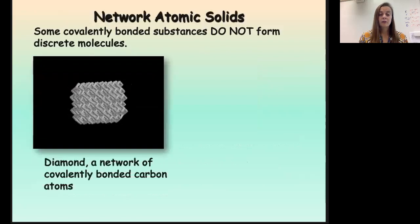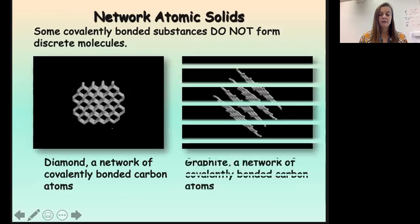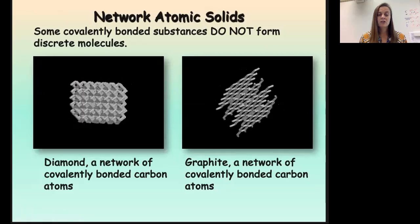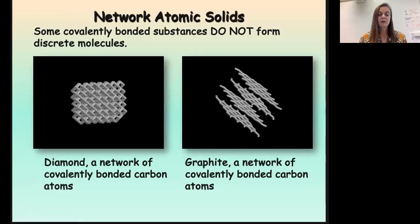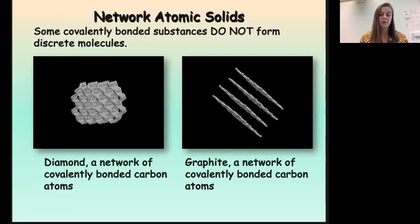So here's just a three-dimensional view of diamond and then a three-dimensional view of graphite. You can see that with graphite, you have those distinct sheets that are then bonded together, whereas diamond is all tetrahedrally linked in three dimensions.